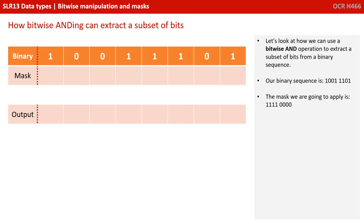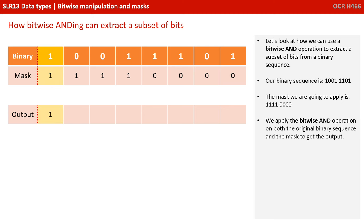Let's look at how we can use a bitwise AND operation to extract a subset of bits from a binary sequence. Our binary sequence is 1001 1101. The mask we're going to apply is 1111 0000. We apply the bitwise AND operation on both the original binary sequence and the mask to get the output.